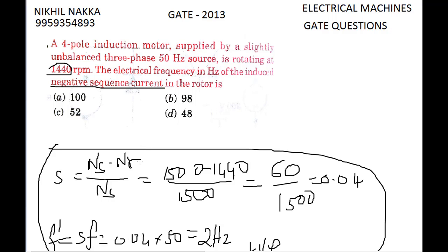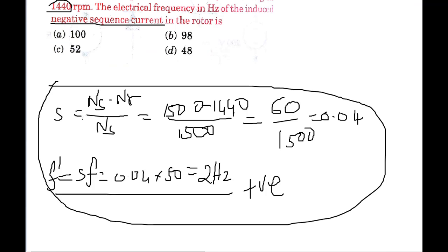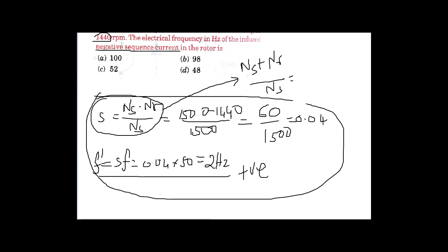He is asking us for negative sequence current. So nothing to worry, there's a small change in the formula. Just a little bit change in the slip formula. This slip formula is to be modified like this: just replace minus with plus, so we get NS plus NR by NS. Therefore...